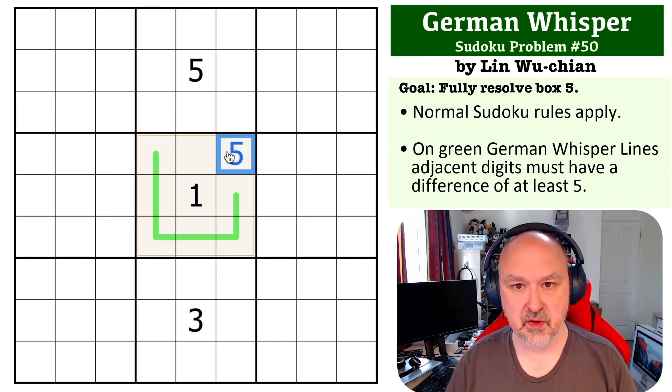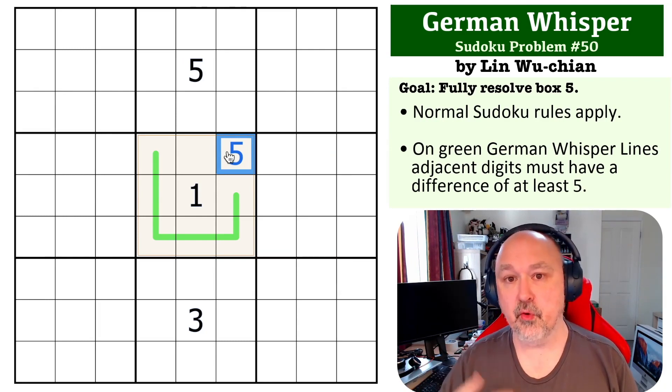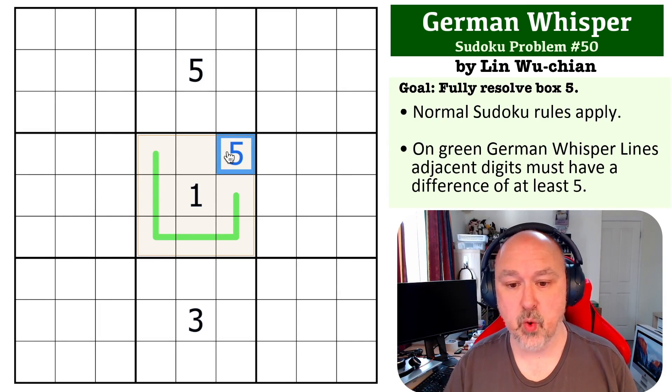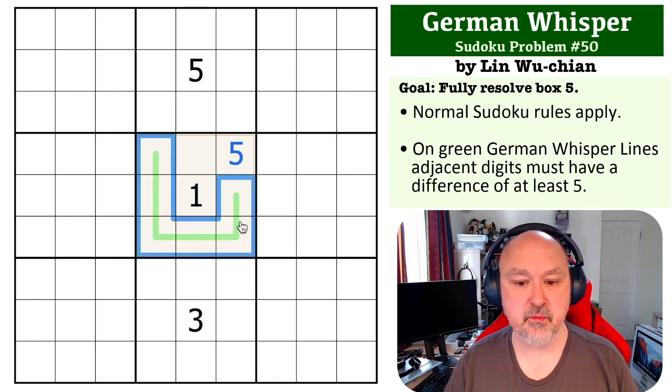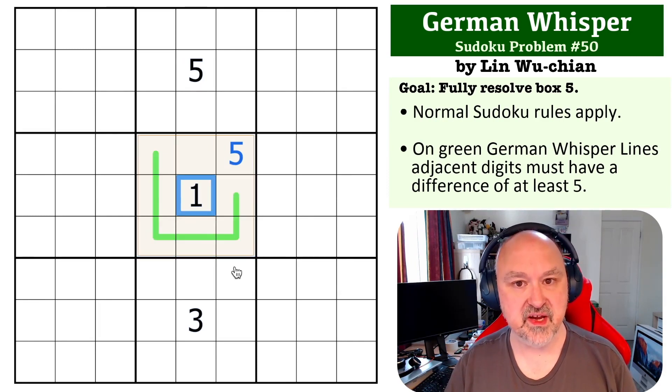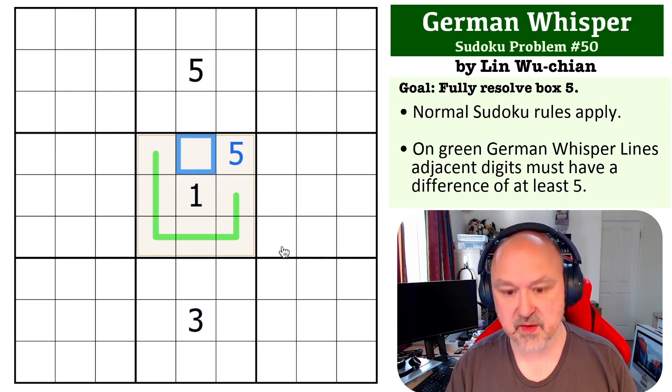Now, on the Whisper line, four and six are also very restricted because there's only one digit for each of them that is five away. Four only has nine, six only has one. So if we were to put six on this line, we'd have to put a one next to it, but one is already in the box. So the other place we can put six is here.